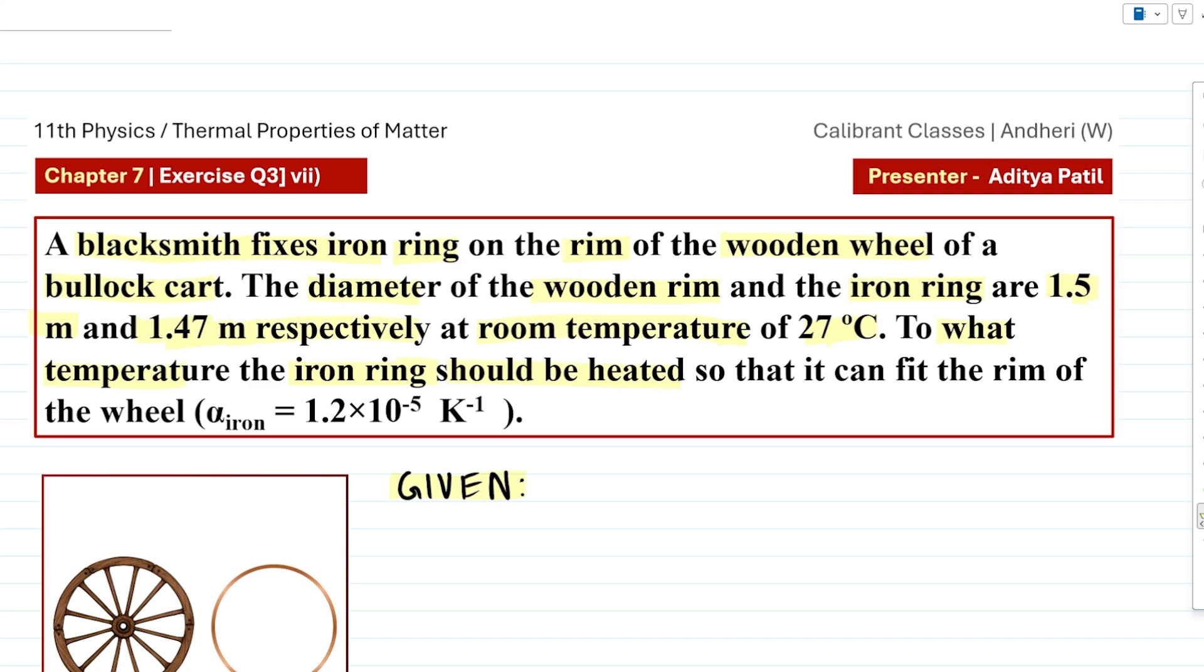To what temperature the iron ring should be heated so that it can fit the rim of the wheel, provided the coefficient of linear expansion alpha for iron is 1.2 into 10 raised to minus 5 per Kelvin. So let's understand this story with a diagram.